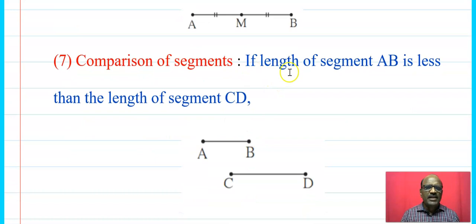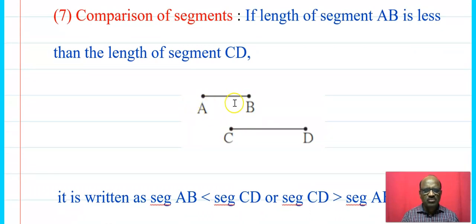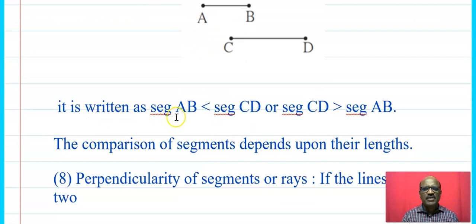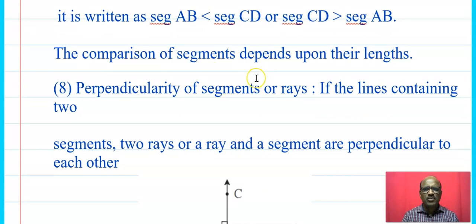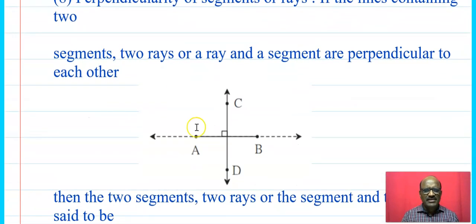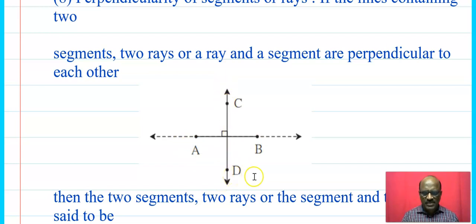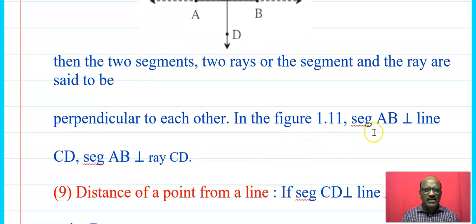Now the comparison of segments. If the length of segment AB is less than segment CD, then segment AB is smaller than segment CD. Comparison of segments depends upon their length. Now the perpendicularity of a segment or a ray: if line CD is perpendicular to segment AB, or segment AB is perpendicular to line CD, it is written symbolically as segment AB is perpendicular to line CD.